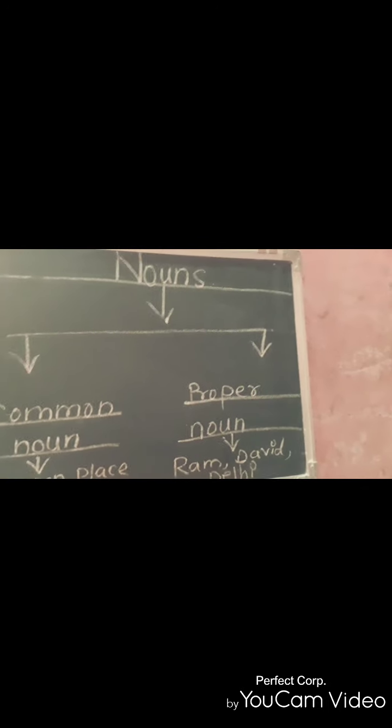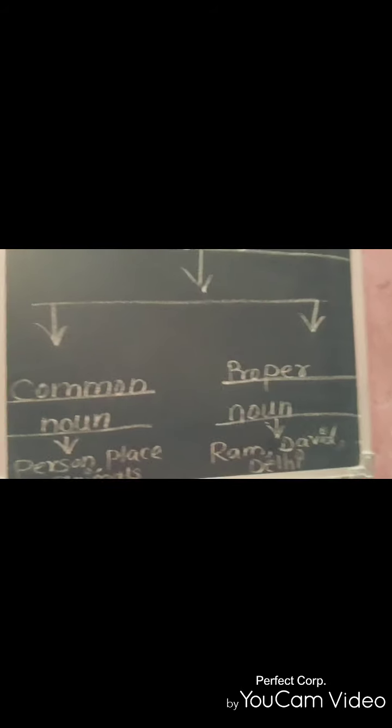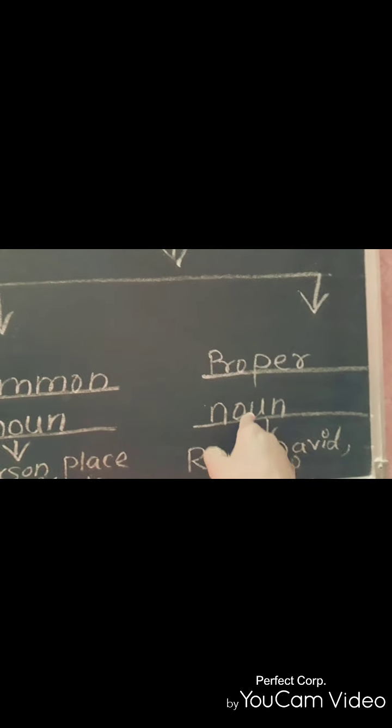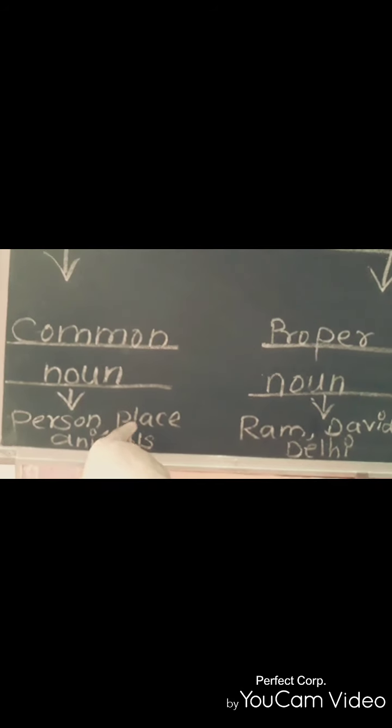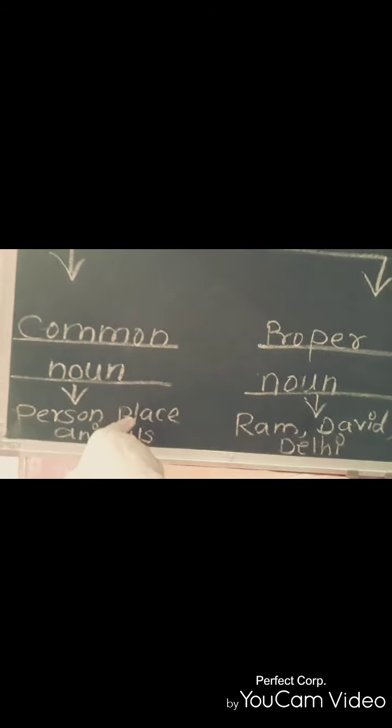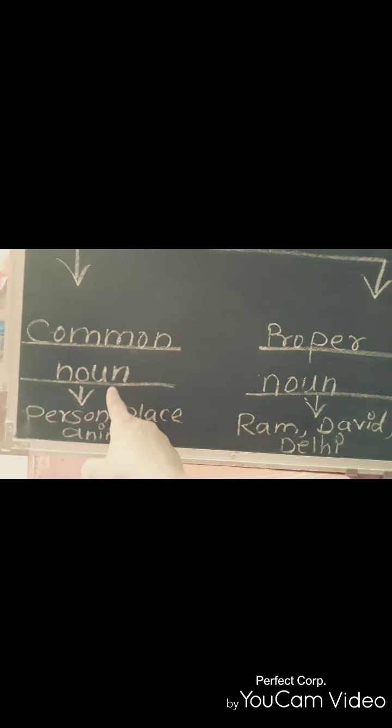Nouns are of two types. Noun is divided into two parts. One is common noun and another is proper noun. And in common noun, when we are talking about group of animals, group of persons, places, birds, fruits, furniture, things, that all things come under the common noun.